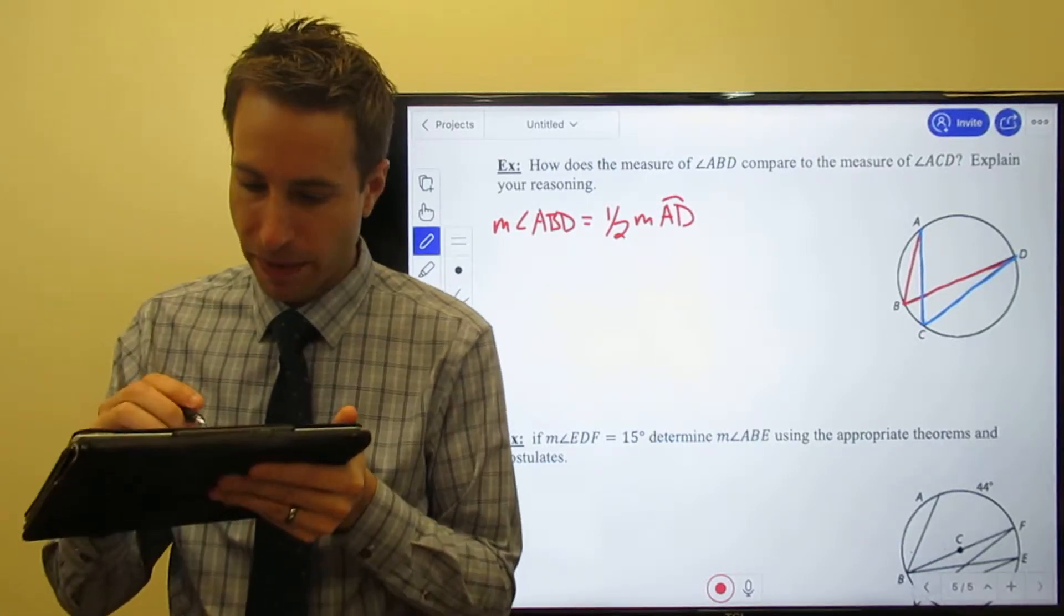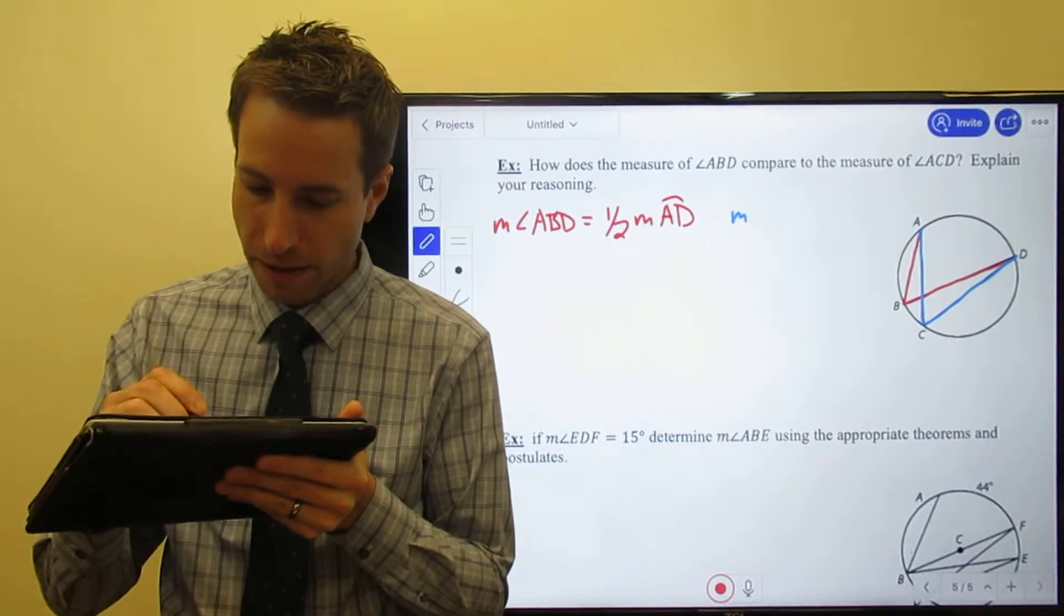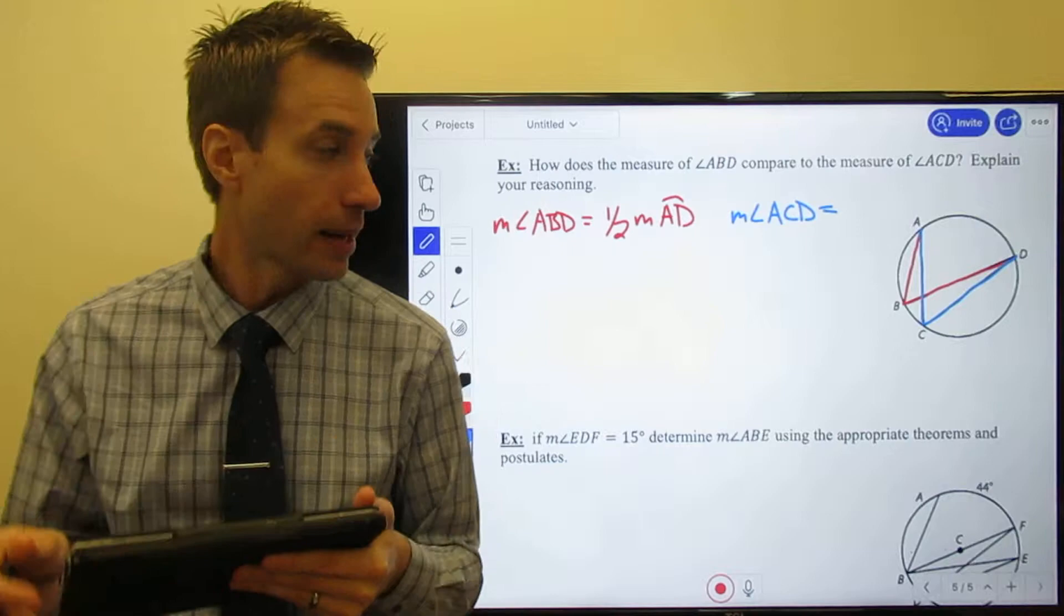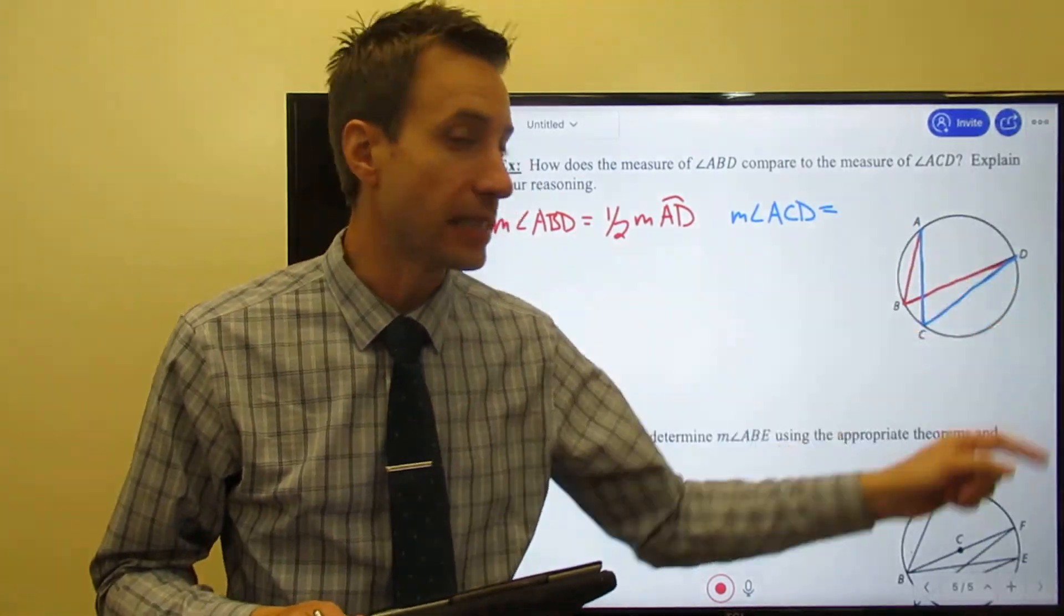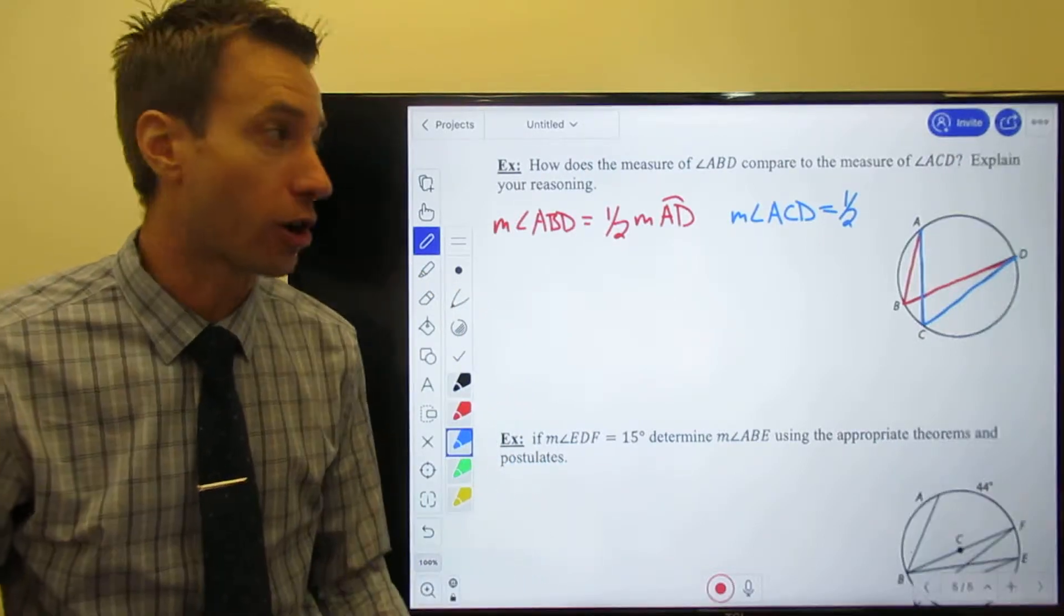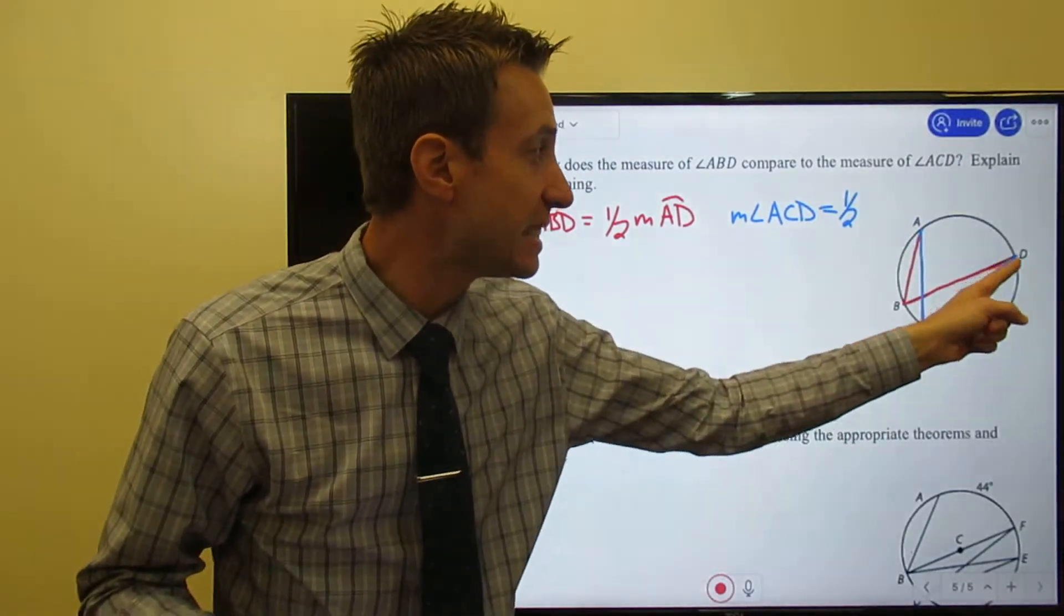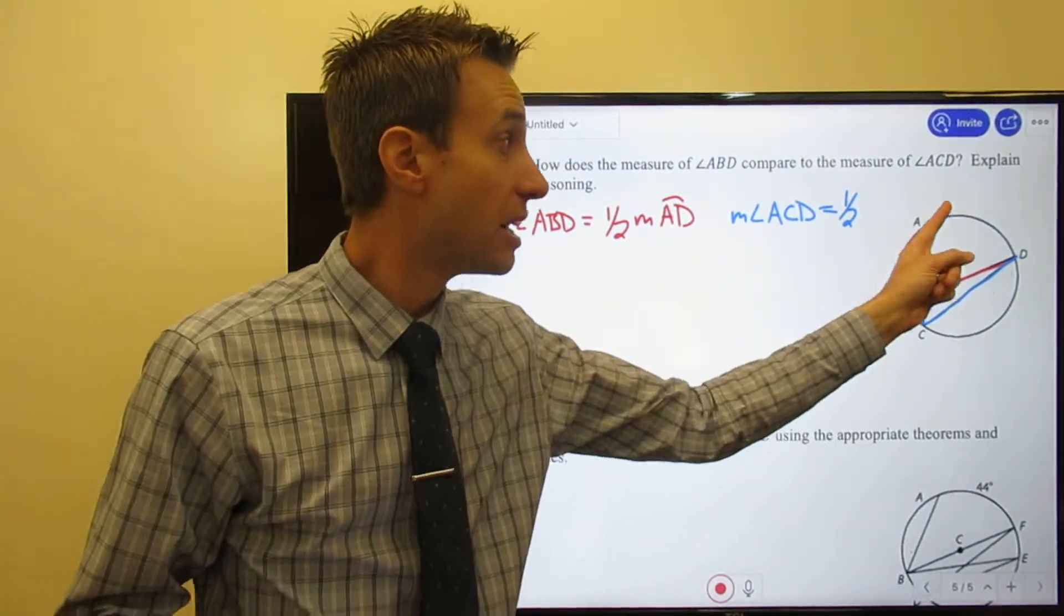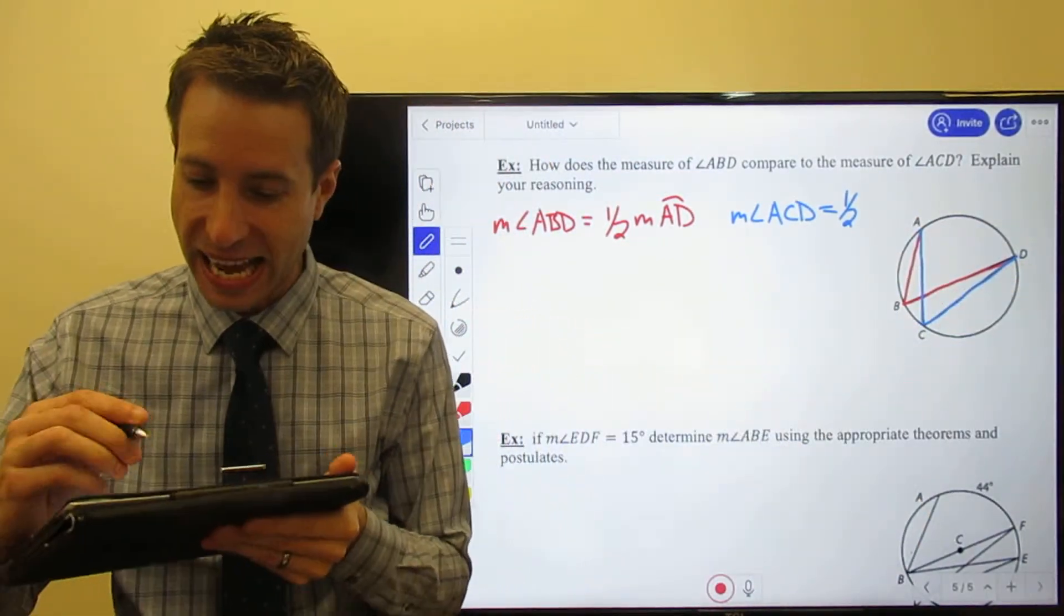Now the blue one. The measure of angle ACD is equal to one half the measure of the arc that it creates. Well, ACD also creates, do you see it? It's also arc AD.